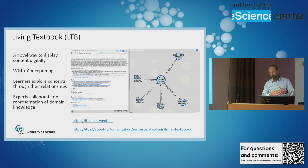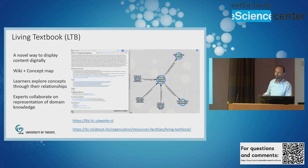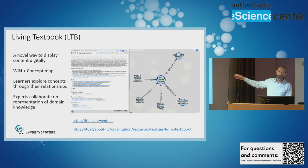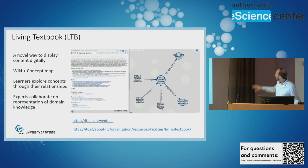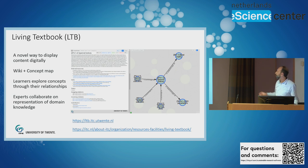The idea behind it is that if we have a field of knowledge, we cut it down into small pieces. We call them concepts, represented by these small circles. Each circle has a text explanation on the left-hand side — so if you click on a circle you see the text, which basically serves as a wiki text. On the right-hand side you can browse through the concept map and see the relationships, connected by arrows. You also see the semantics of the relationships.